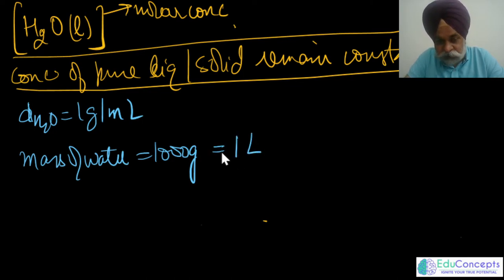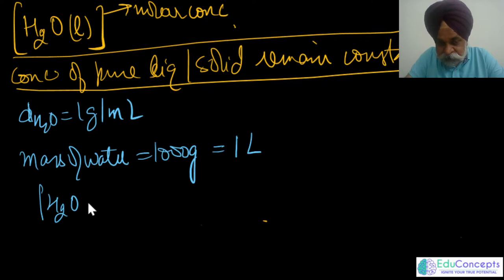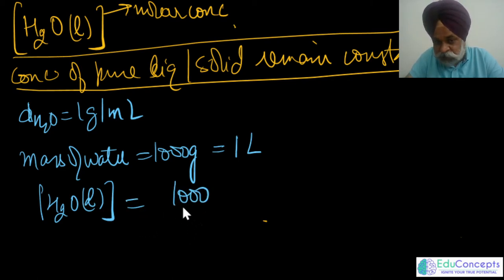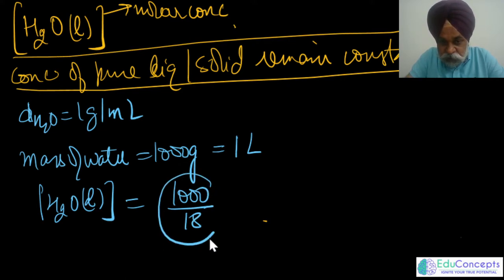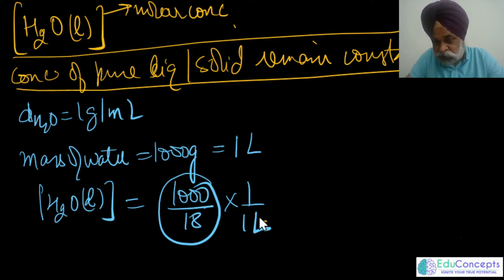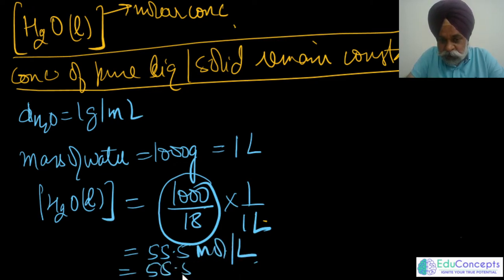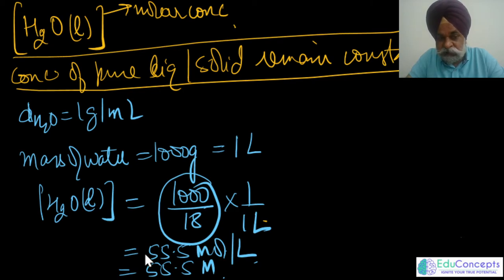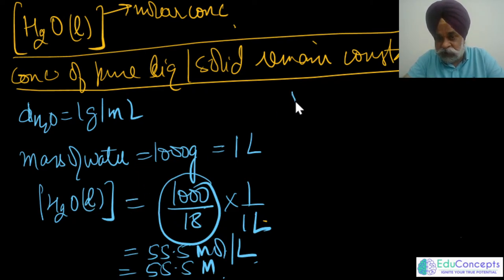Molarity is moles per liter, shown by square brackets. So 1000 grams divided by 18 (molar mass of water) gives moles, and those moles are present in one liter — giving a molarity of 55.5 mol/L. This molarity of pure water remains constant during the progress of the reaction. The concentration of H₃O⁺ and OH⁻ changes with temperature, but at a particular temperature both also remain constant, and water always remains 55.5 M.